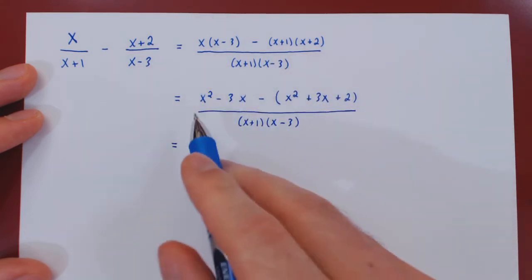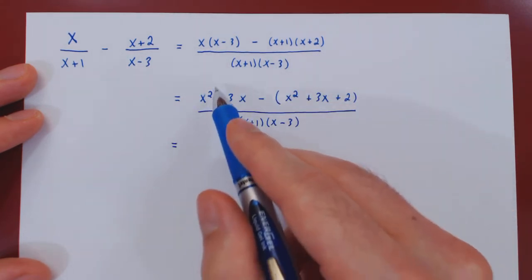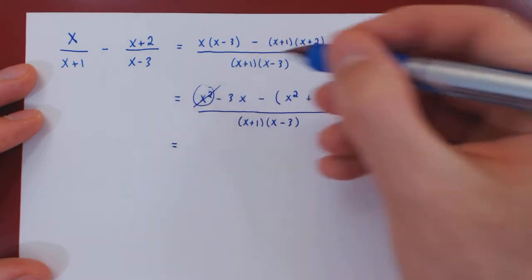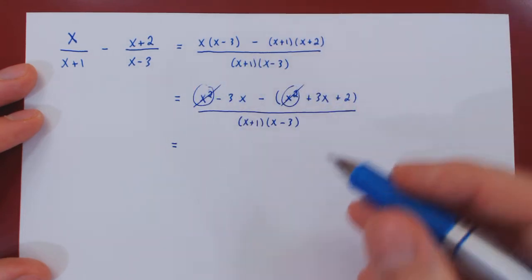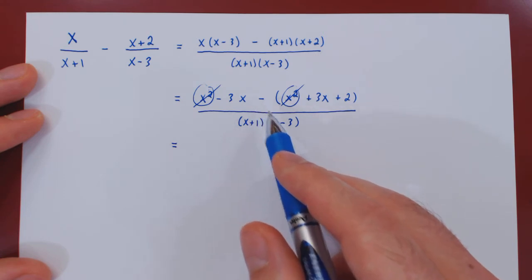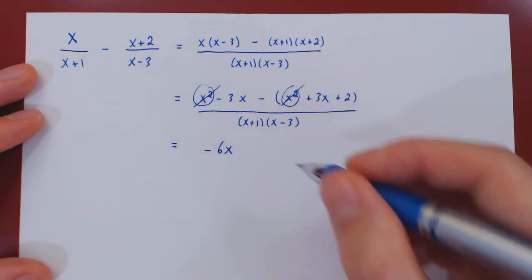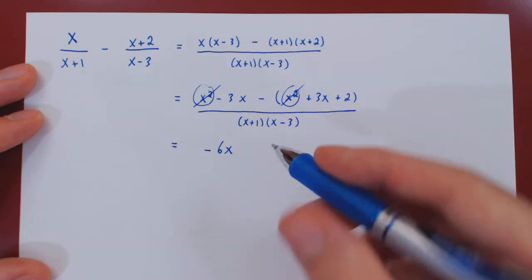Now let's see if we can cancel some terms on the numerator. We have an x squared minus x squared, so these two cancel. Then we have negative 3x and negative 3x, that is negative 6x. And finally, the leftover negative 2.